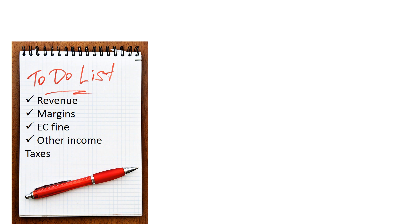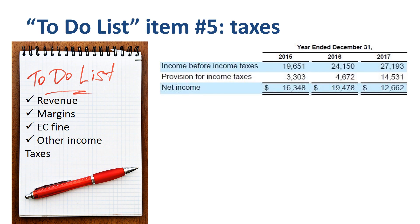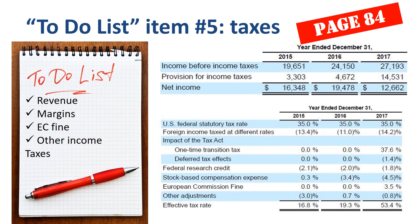Next item: the provision for income taxes. The pattern in 2017 is unusual, with the provision for income taxes being relatively high compared to income before income taxes. Page 84 provides an overview of the effective tax rate: 17% in 2015, 19% in 2016, and 54% in 2017. The unusually high rate of 54% is driven by the impact of the Tax Act, with the one-time transition tax amounting to 38% of income before income taxes. Due to the timing of the enactment and the complexity of the Tax Act provisions, the effect on the expected effective tax rate for 2018 is as yet unknown — an interesting item to watch during 2018 quarterly earnings releases and the 2018 annual report.